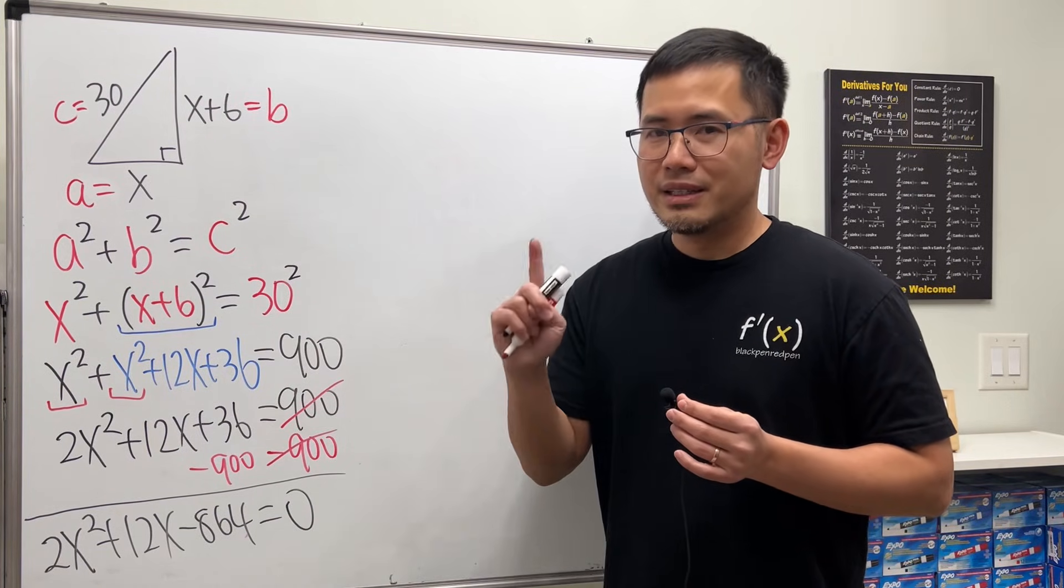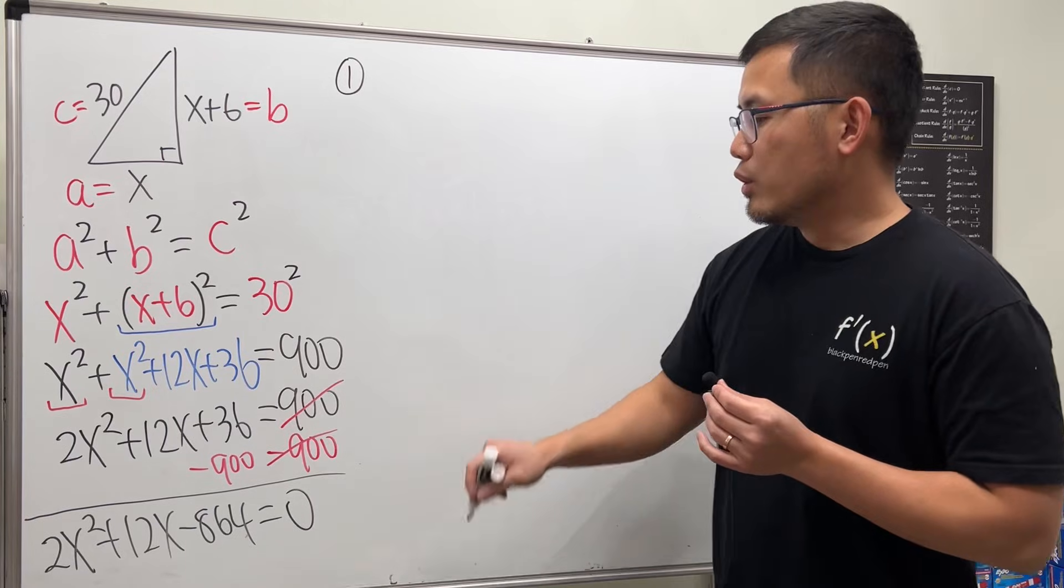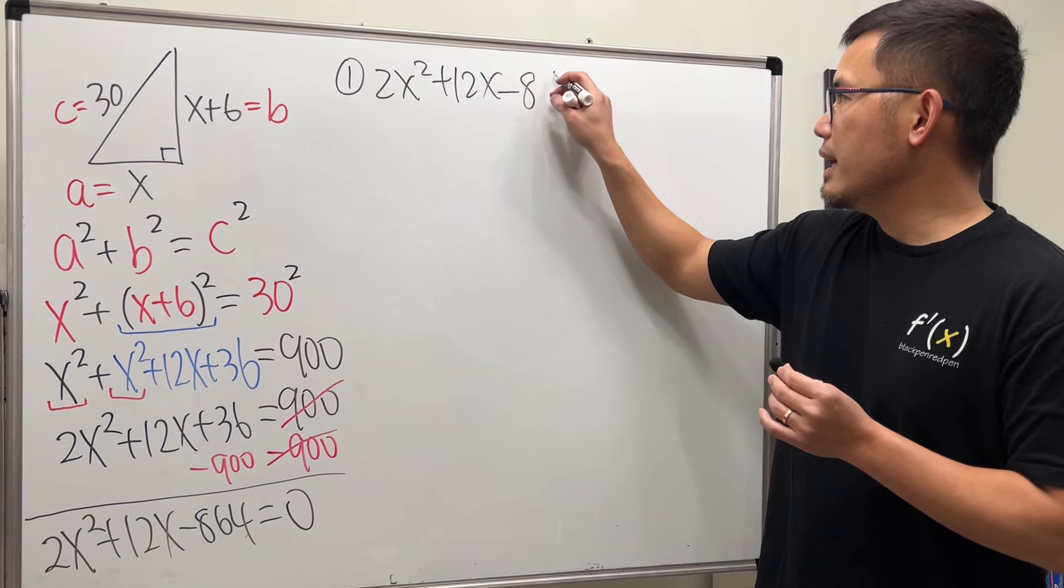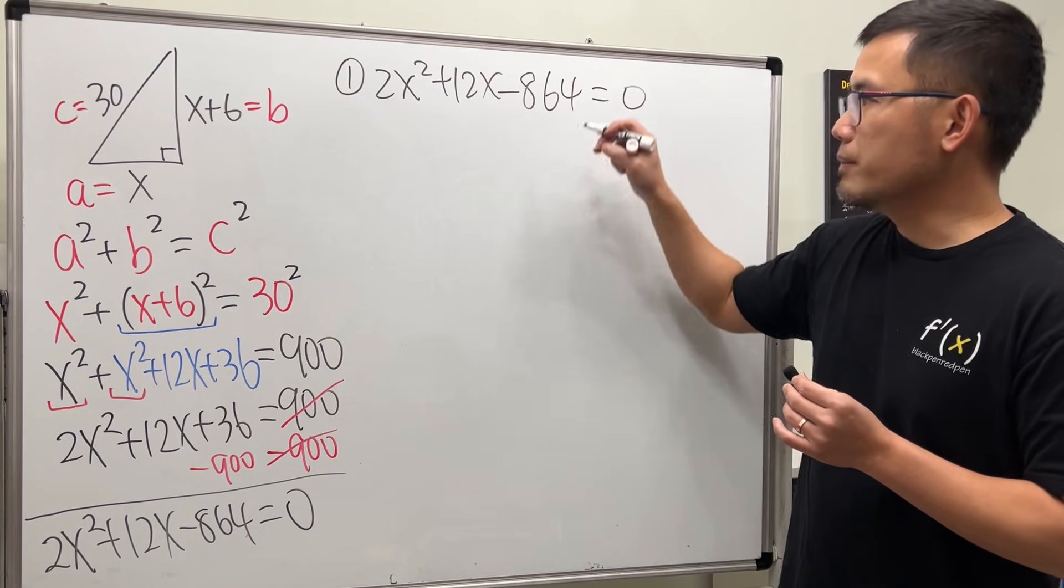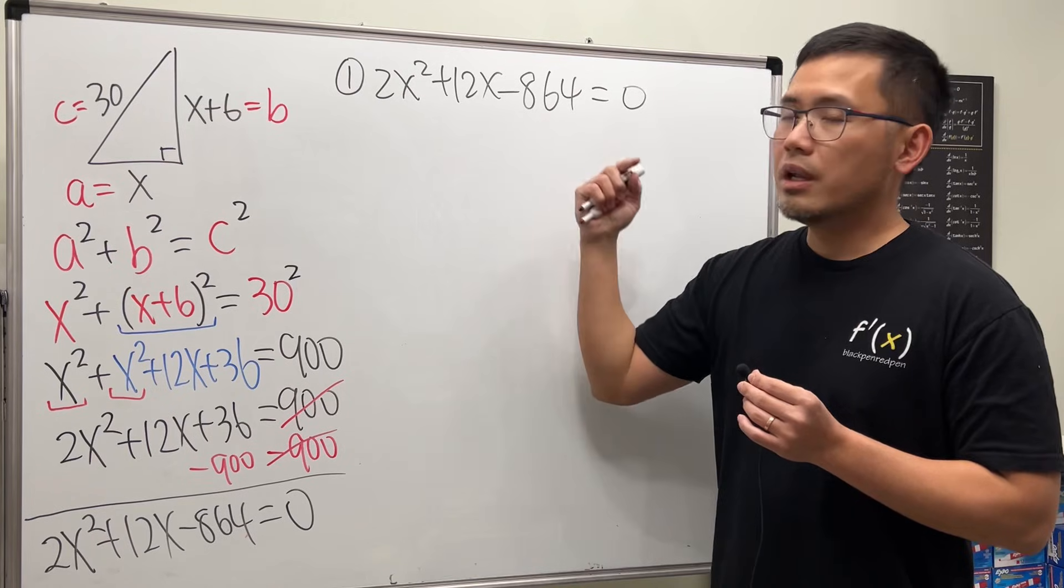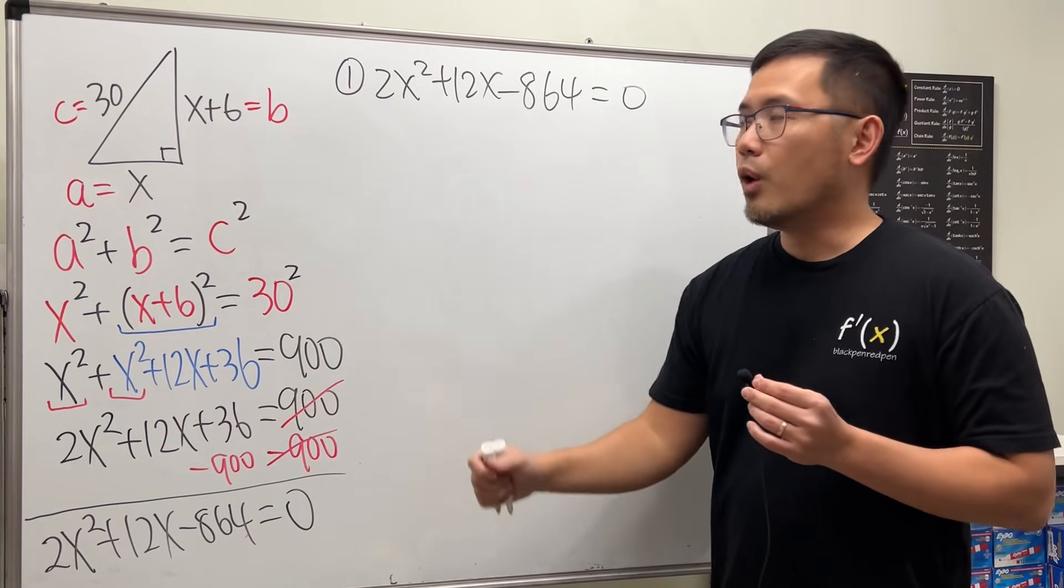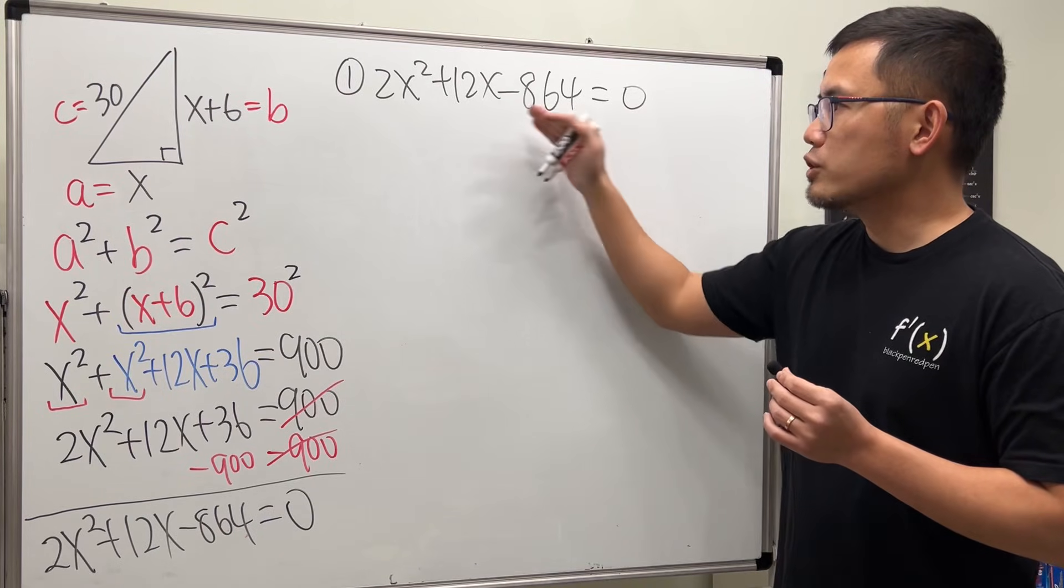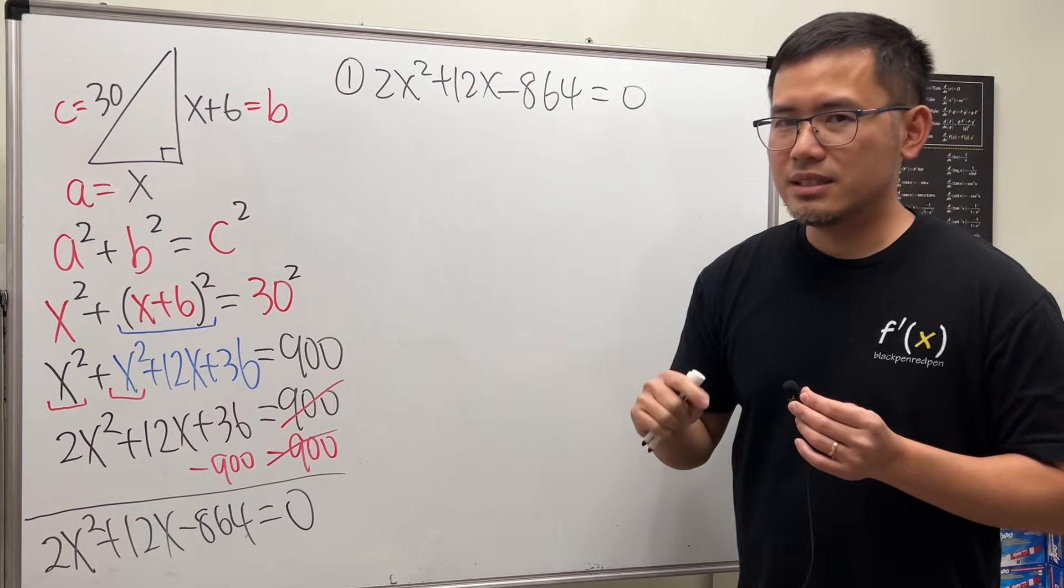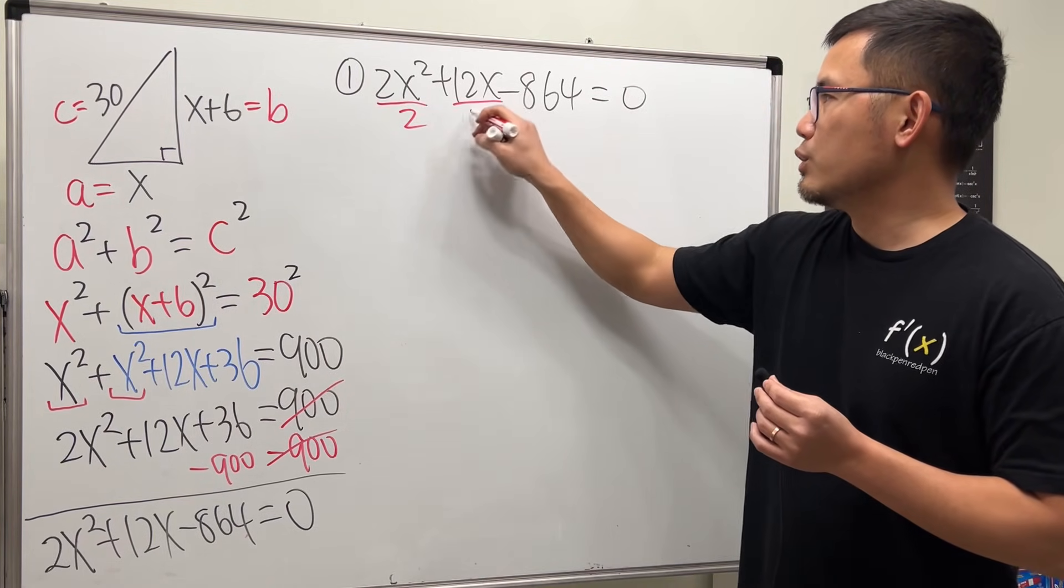Two ways. The first way is to factor it. So, to factor this, we are looking at 2x² + 12x - 864 = 0. First, notice that all the numbers right here, they are all divisible by 2. So we can factor out a 2. Or we can just look at this as the equation and divide everybody by 2. In fact, let's do that. I think it's easier to see that. Let's divide everybody by 2, so that we can reduce all the numbers.